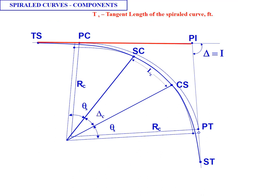T sub s is the tangent length of the whole spiral curve, so this is the distance between the PI and the TS point, so when we're doing stationing the TS is a critical component. And it's important to make the distinction T sub s is that tangent length TS, so uppercase T, uppercase S is the tangent to spiral point.